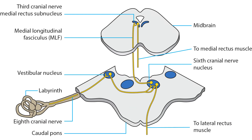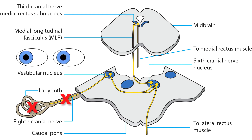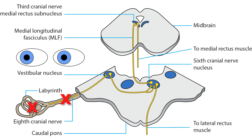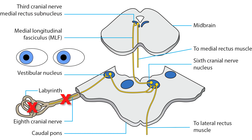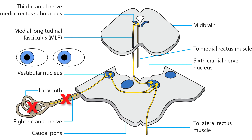Now let us see what would happen if you were to sustain acute unilateral damage to the inner ear or vestibular nerve on the right side. Both eyes would drift toward the damaged right side. The brain will automatically try to reset the eyes toward the center of the orbit. As a result, you will develop a compensatory jerk nystagmus with its fast phase to the left — a left-beating jerk nystagmus.